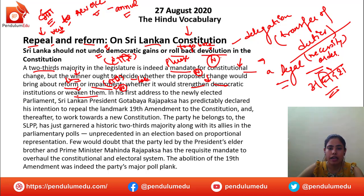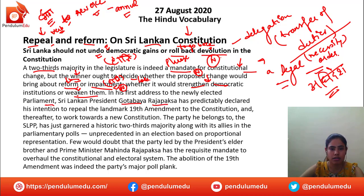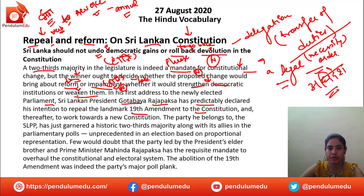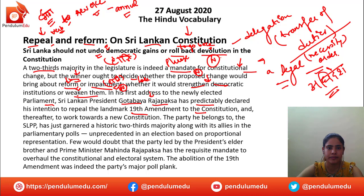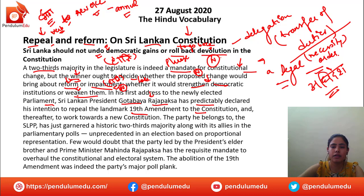In his first address to the newly elected parliament, Sri Lankan president Gotabaya Rajapaksa has predictably declared his intention to repeal the landmark 19th amendment to the constitution. He, in his very first speech, declared it clearly — predictably, meaning as expected. Predictably is an adverb meaning as was thought or anticipated.